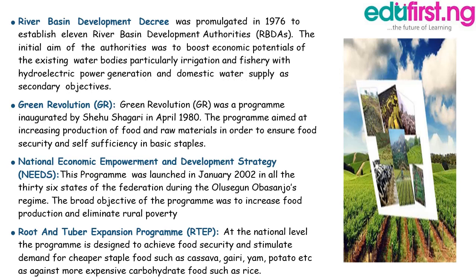The River Basin Development Decree was promulgated in 1976 to establish 11 river basin development authorities. The initial aim was to boost the economic potentials of existing water bodies, particularly irrigation and fishery, with hydroelectric power generation and domestic water supply as secondary objectives. The Green Revolution was a program inaugurated by Shehu Shagari in April 1980, aimed at increasing production of food and raw materials in order to ensure food security and self-sufficiency in basic staples.